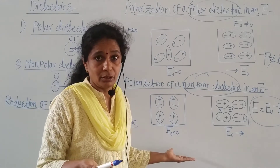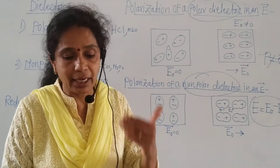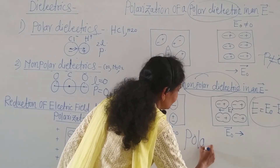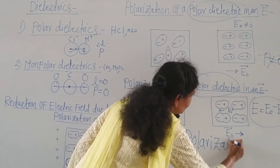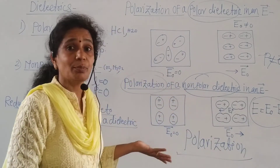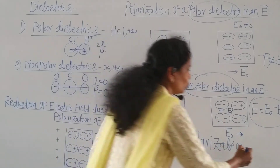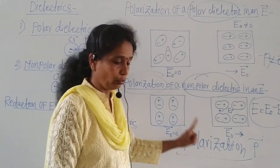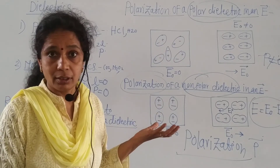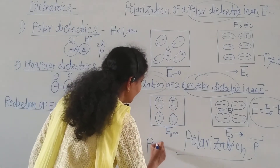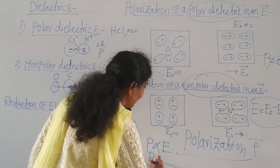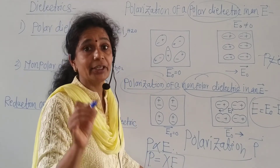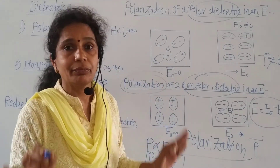What do we mean by polarization? Polarization means the net electric dipole moment per unit volume is called polarization. It is denoted by the vector P. For linear isotropic dielectrics, P is directly proportional to E, and therefore P is equal to χE, where χ (chi) is the electric susceptibility of the material, which is different for different materials.